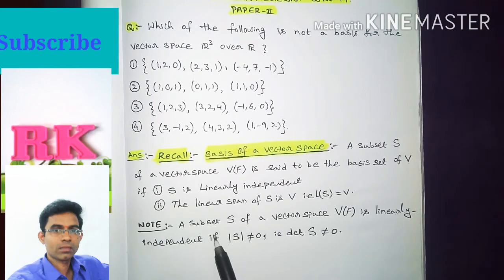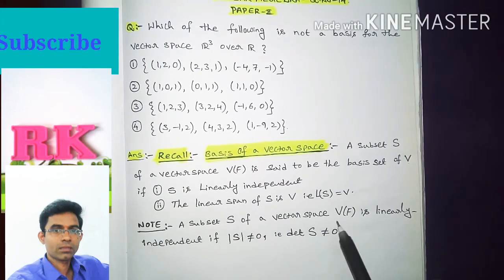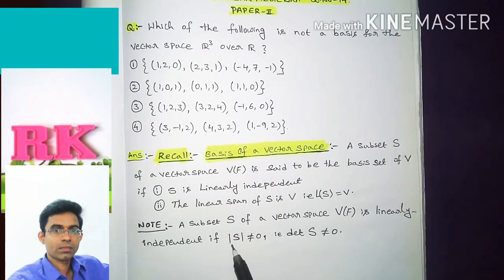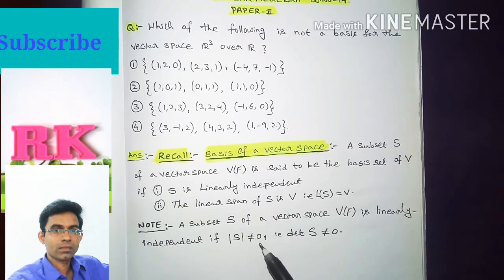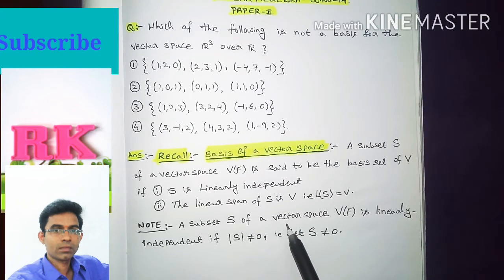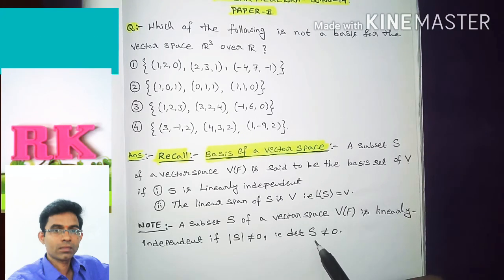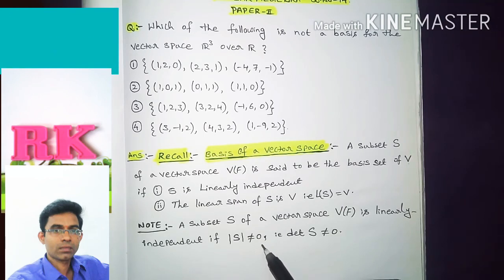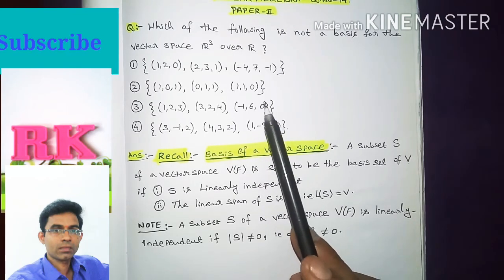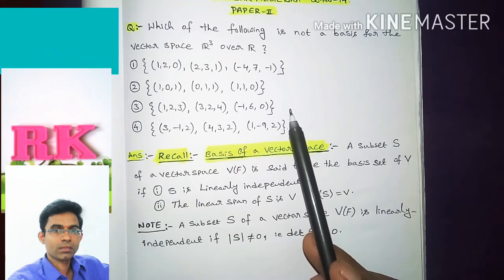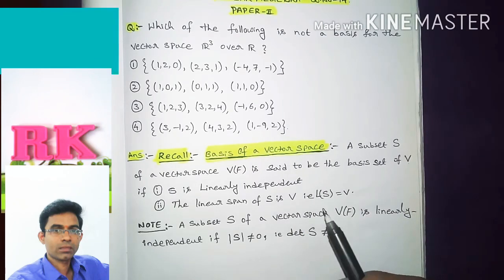An important note: a subset S of a vector space V over F is linearly independent if the determinant of S is not equal to zero. That is, if the determinant of the given set is not equal to zero, then the given set of vectors is linearly independent. We will use this to check whether the given set of vectors is linearly independent or linearly dependent.